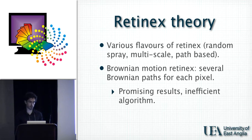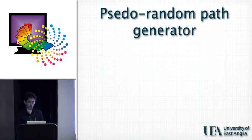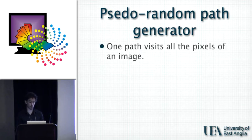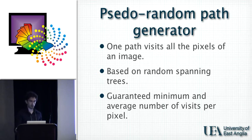But at the same time, the authors themselves admitted that the algorithm was not very efficient in terms of speed. So we asked: can we do better? We propose a pseudo-random path generator. In this case, we can have a single path that visits all the pixels of an image. Our algorithm is based on random spanning trees, and most importantly we can guarantee the average number of visits per pixel and also the minimum. So we are sure that we won't have any pixel that is not visited at all or visited just once or twice compared to others visited several times.